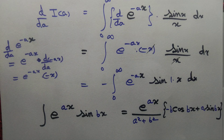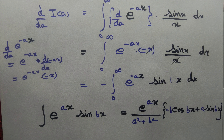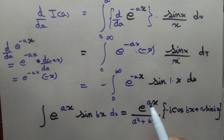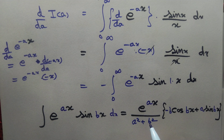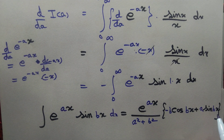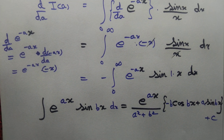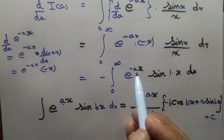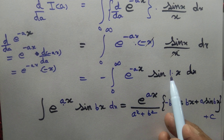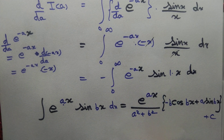We know the formula: ∫ e^(ax) sin(bx) dx = e^(ax)/(a² + b²) · (−b cos(bx) + a sin(bx)) + C. Here we take a = −a and b = 1 — that's why we wrote 1·x, just to identify b equal to 1.